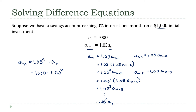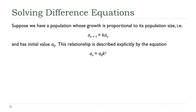I mentioned this in the last lecture: if you're already familiar with compound interest and the compound interest formula, that is exactly what we've ended up with here. I've just generalized it by replacing 1.03 with a variable k. So the conclusion is: if we have a difference equation of this form, it can be described explicitly as aₙ = a₀·kⁿ.